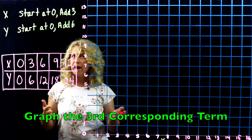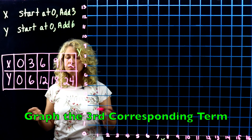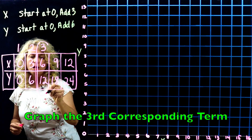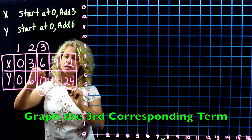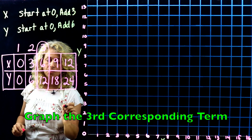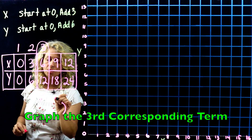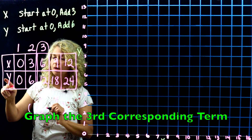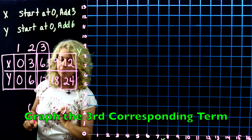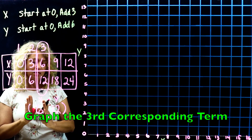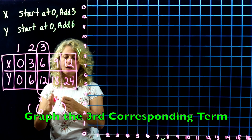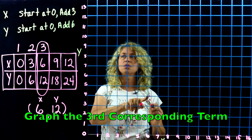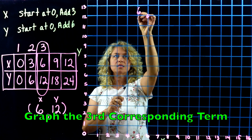If asked to graph the third corresponding term: the first is (0,0), the second is (3,6), and the third is (6,12). You need to remember that 6 is the X value and 12 is the Y value. X is always written first — like ABC order, XYZ — so go over 6 and up 12.